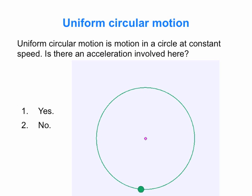Let's go back to what acceleration is. Acceleration is the rate of change — the time rate of change of velocity — and velocity has two pieces that make it up. It's got the magnitude, and the magnitude is not changing here, but the other piece that goes into velocity is the direction, and the direction continually changes as the object moves around the circle. So if you have a change in either the direction or magnitude, then the velocity changes and there is an acceleration. Even though the magnitude of the velocity is constant, the direction is changing, so there is an acceleration.